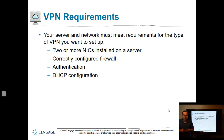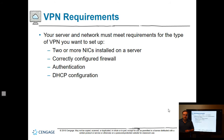Your server and network must meet the requirements for the type of VPN you want. If the VPN server is on the internet with a public IP on one side and a private IP on the other, you need two network cards. If it's behind a firewall, one network card is sufficient. You also need to configure the Windows server firewall to accept VPN traffic, set up authentication, and have DHCP to assign an internal IP address to connecting clients.